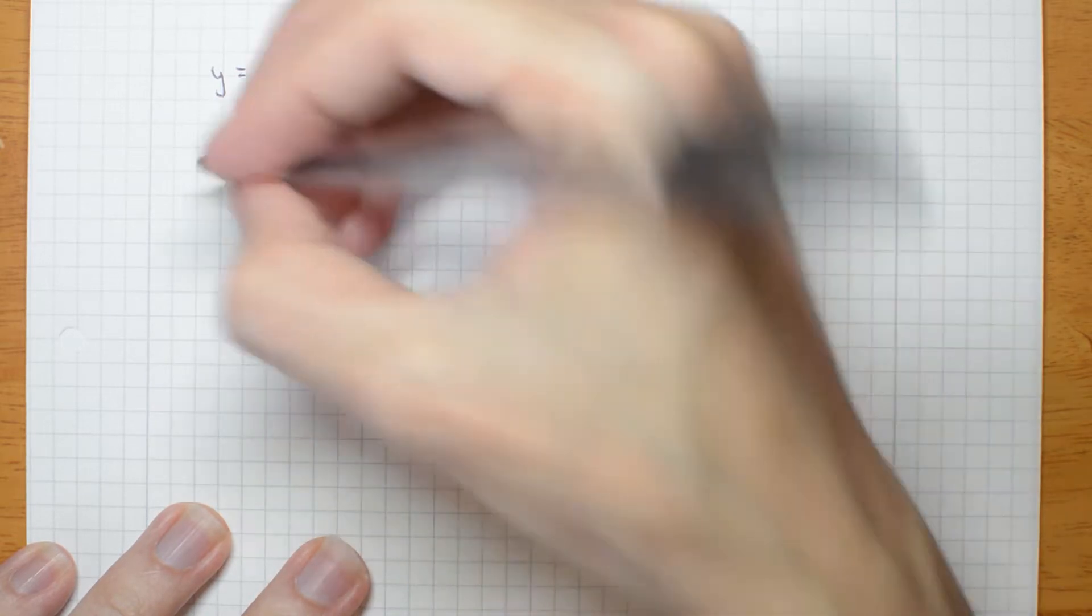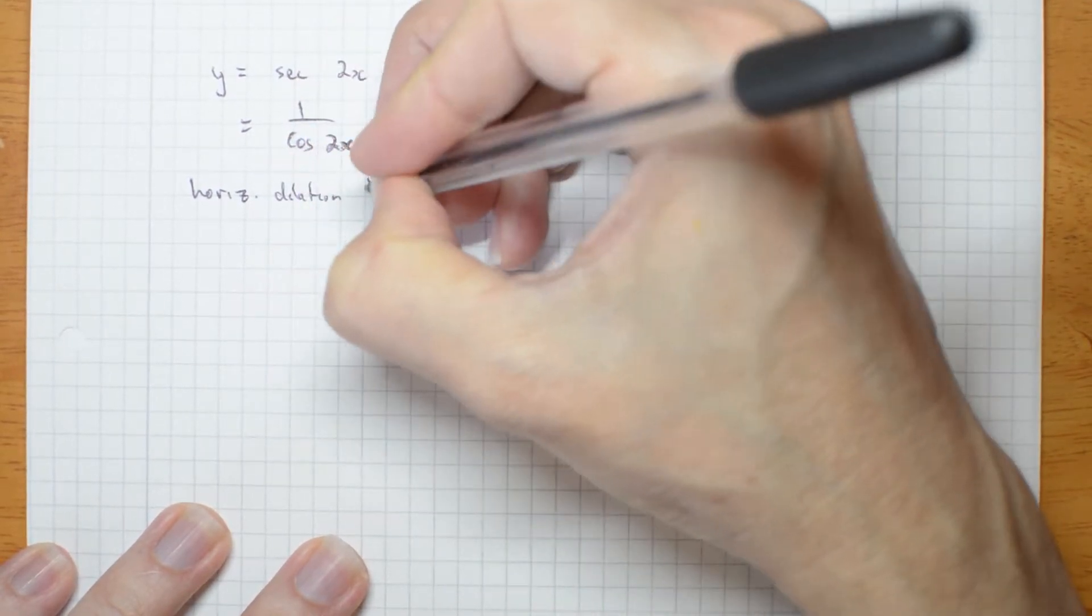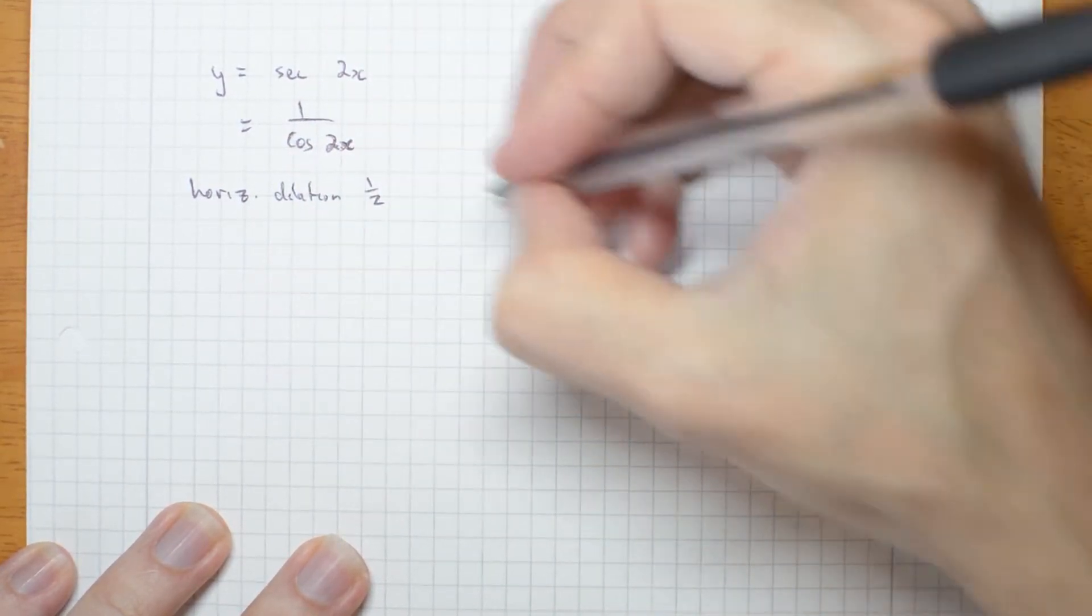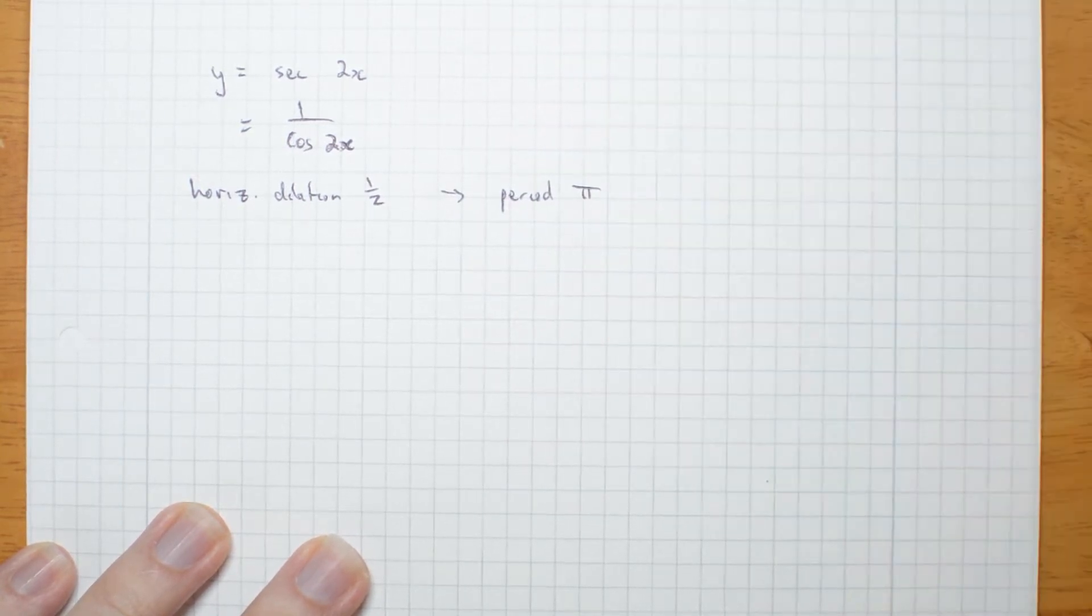This one has a horizontal dilation of a half, meaning its period is π. So let me set up the graph.